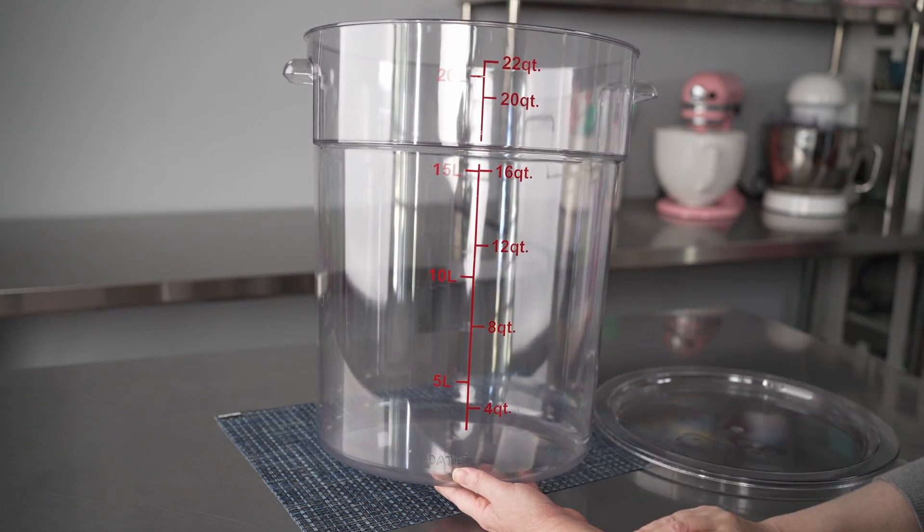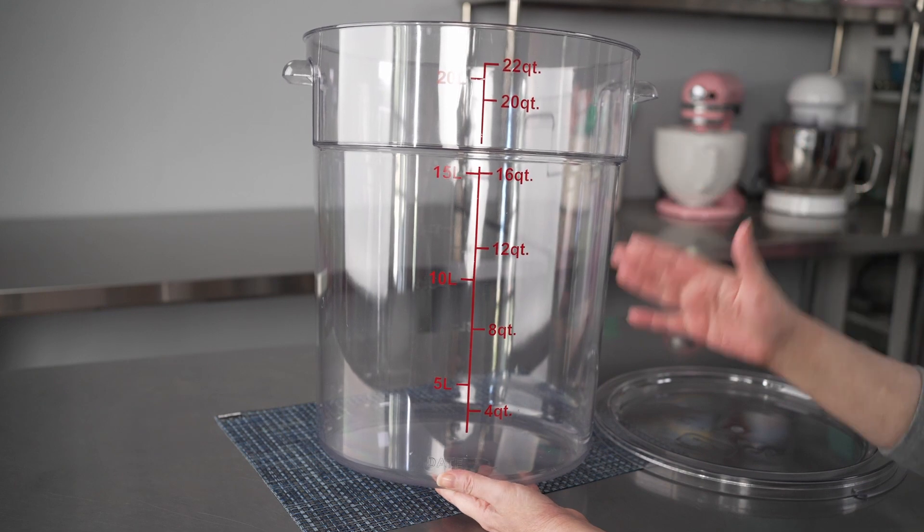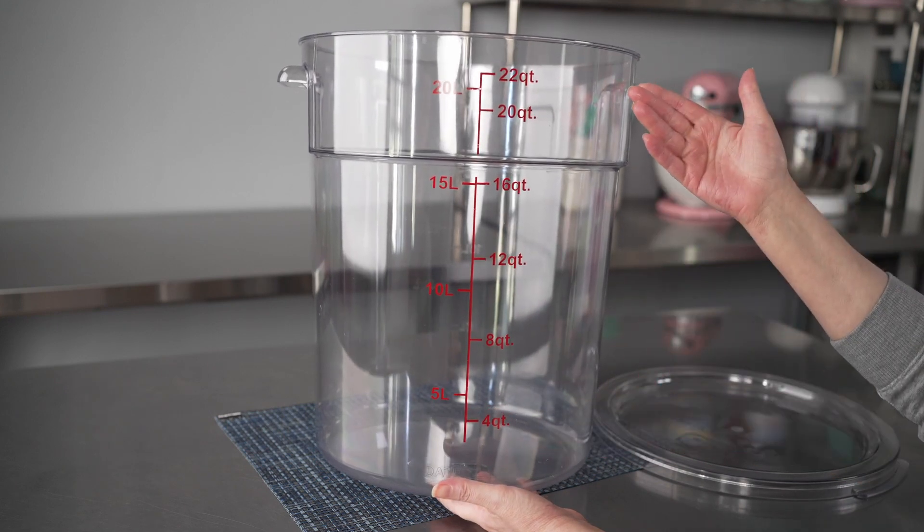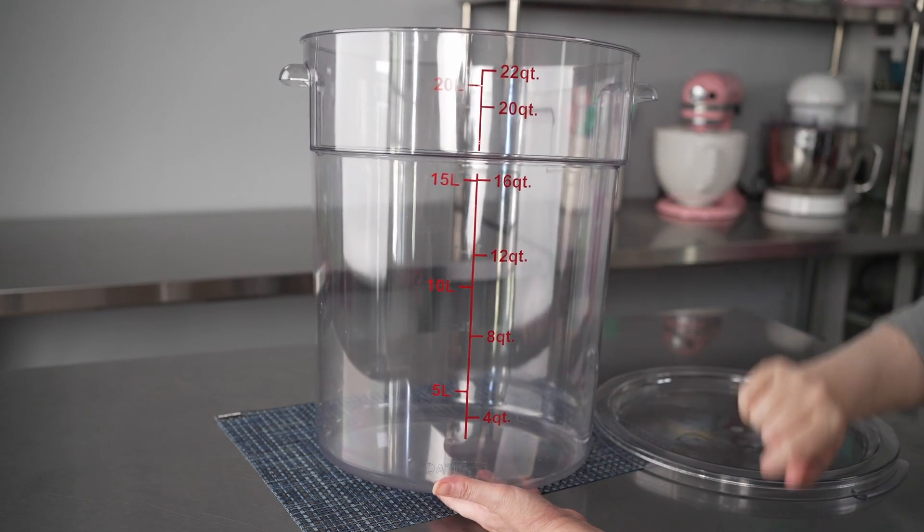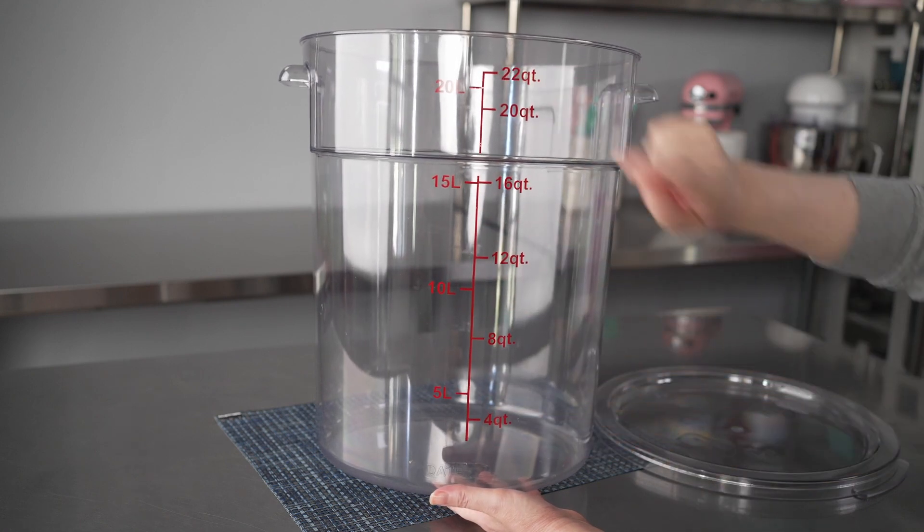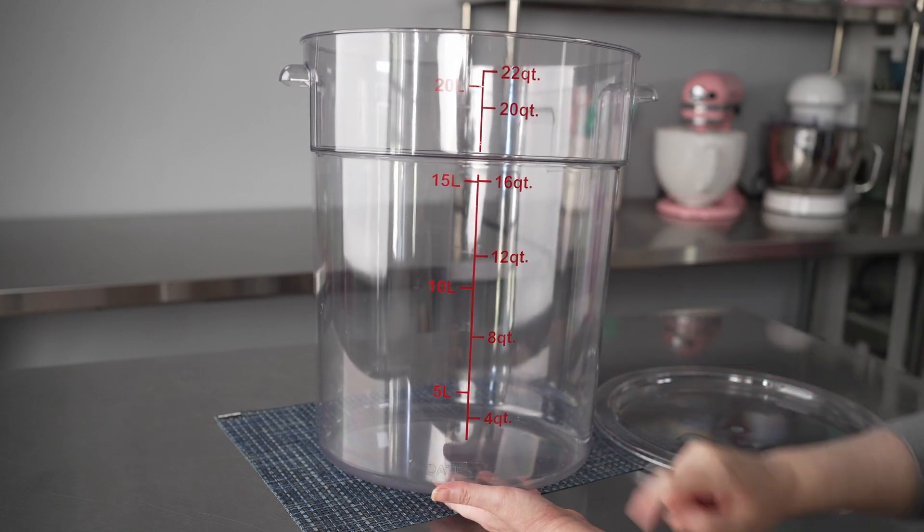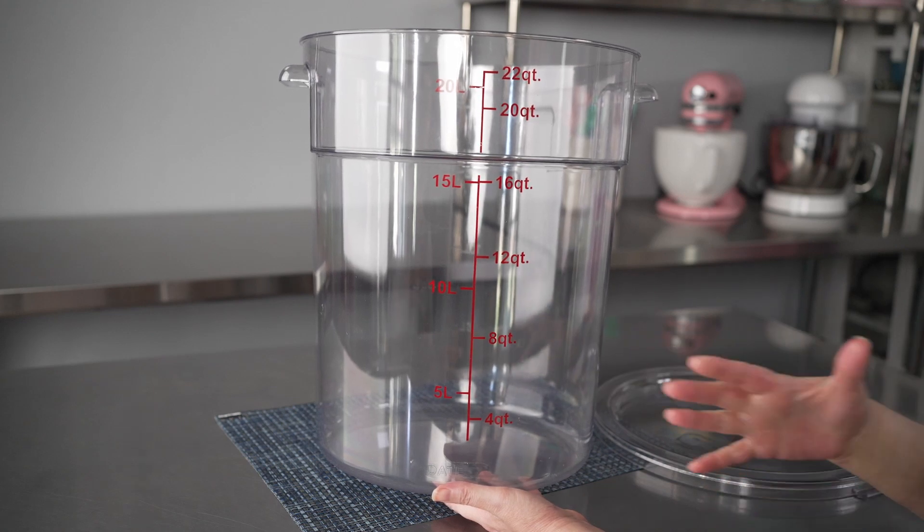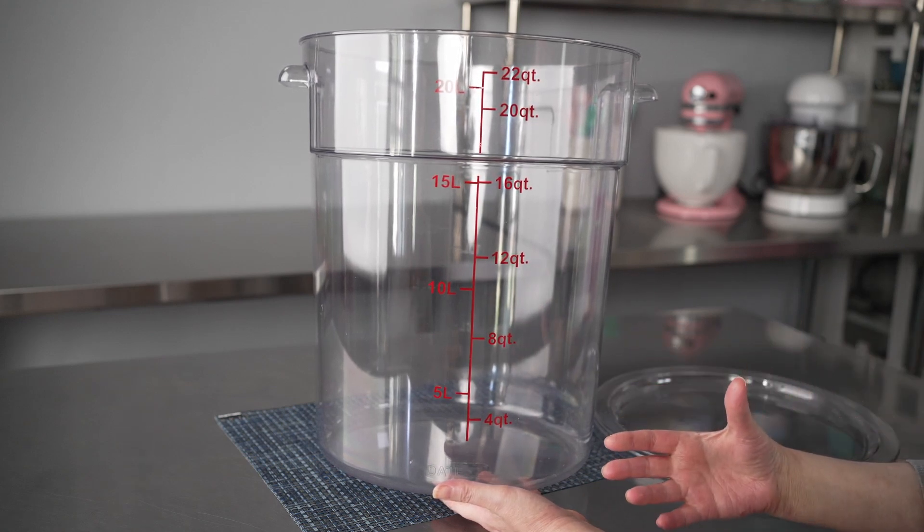One thing we love about these style of food storage containers is you can buy them, as you can see, in really large volumes. This one will hold up to 22 quarts, and it's got that really nice red indicator on the side, which is both in liters and quarts. It allows you to easily spot check your volume.